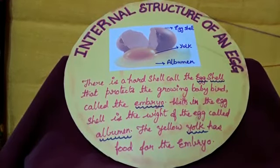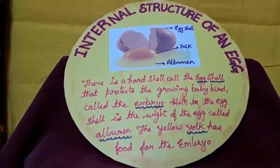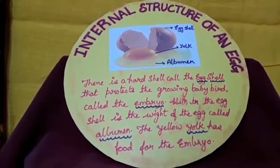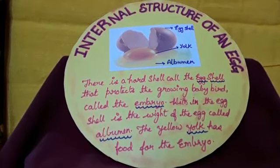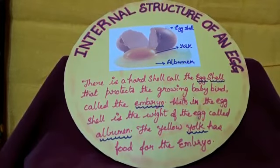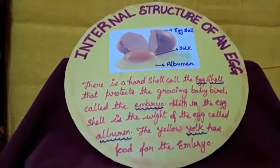Within the egg, the embryo goes through various stages of development. The mother bird sits on the egg and provides warmth to it. The embryo develops only when it is kept warm.